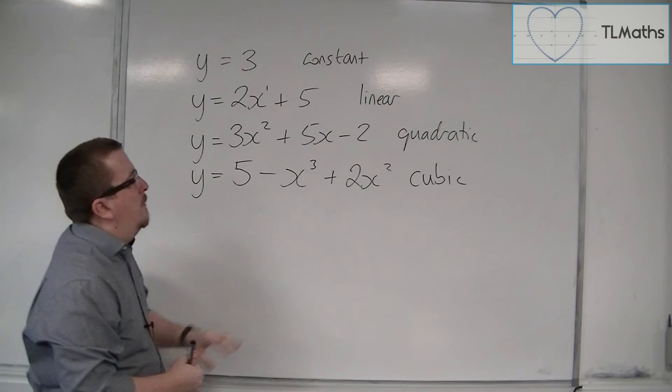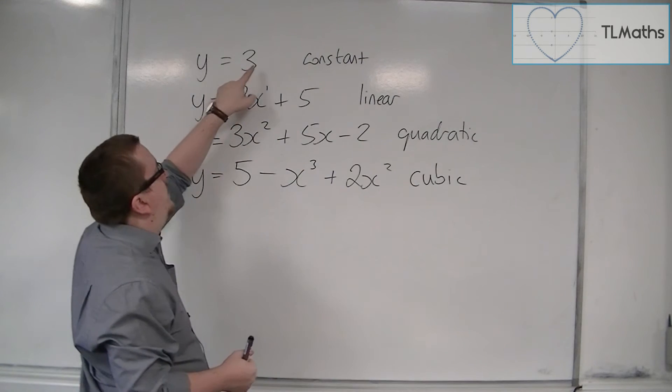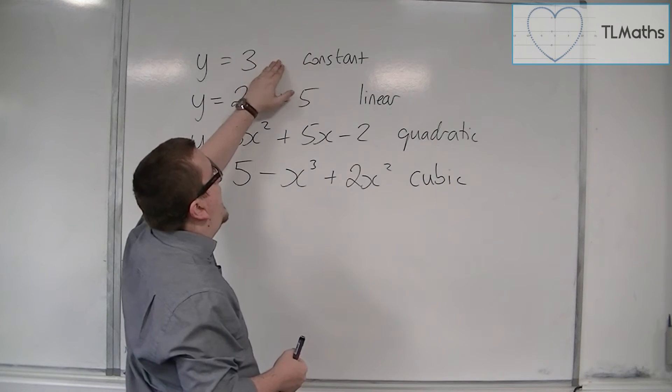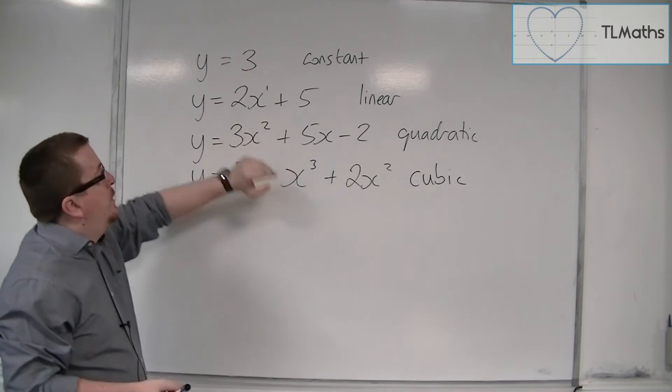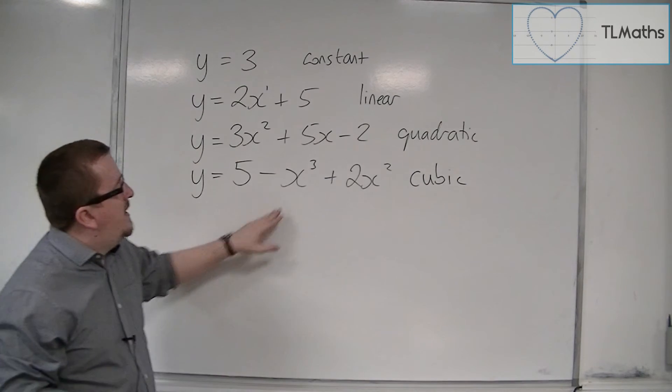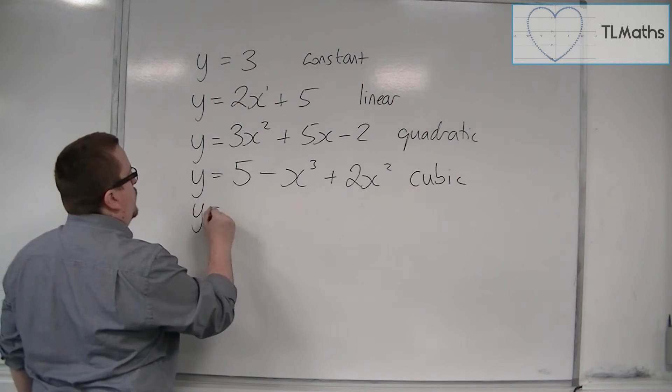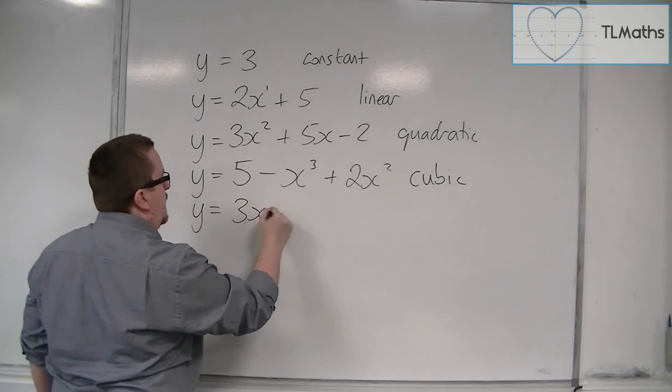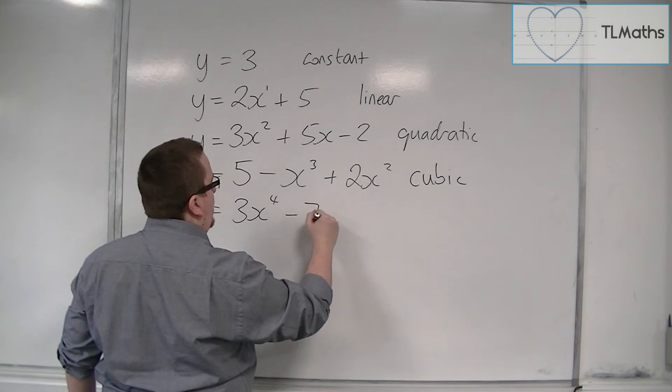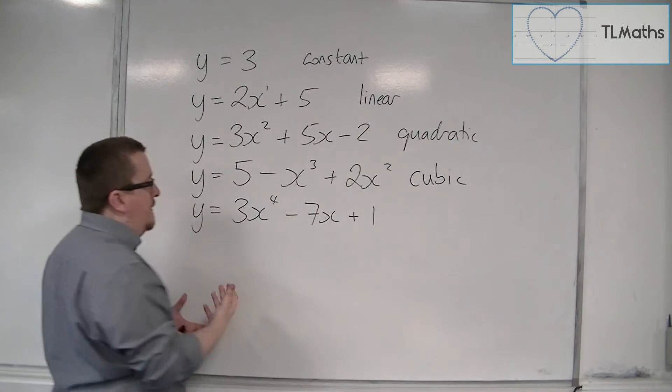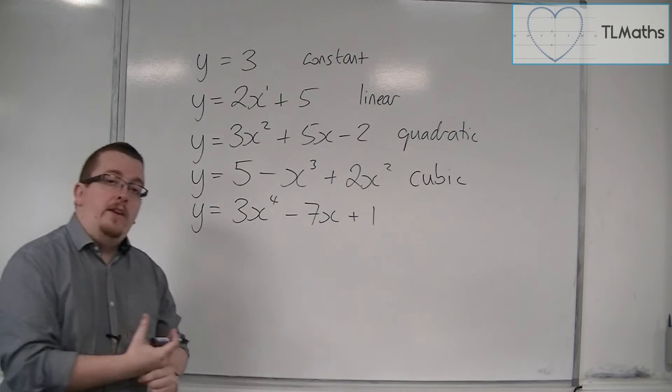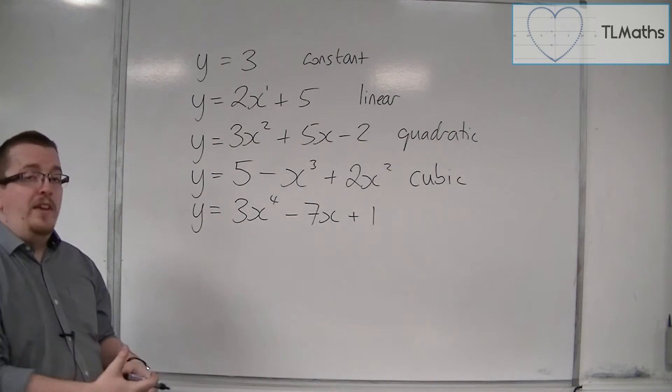So we've got these four stages now. Now, what would be the next one up? Well, it makes sense that we've got, there's no x's here. Again, it's like having x to the 0. We've got x to the 1, an x squared, then an x cubed. So it makes sense we'd have x to the 4. So y is equal to 3x to the 4, take away 7x plus 1.